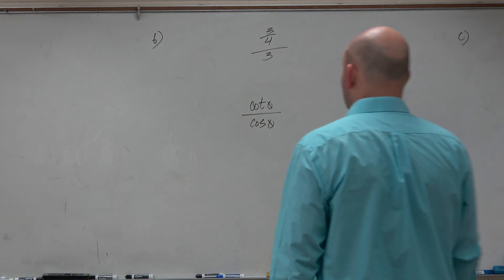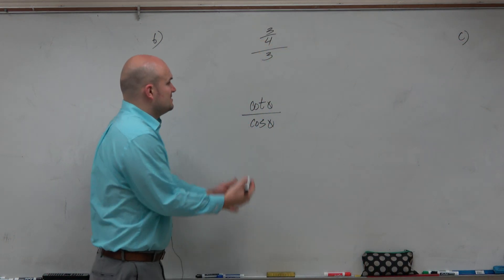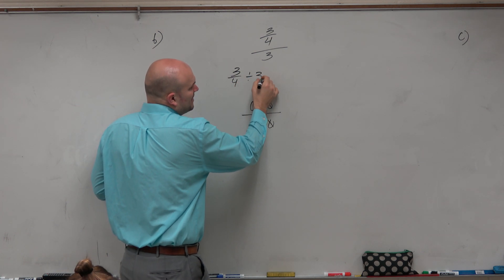What happens when you have a fraction divided by a whole number? How do you solve that? What do you do? You have 3 fourths divided by 3.